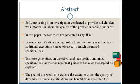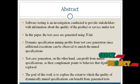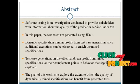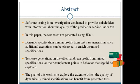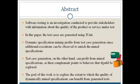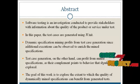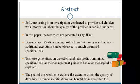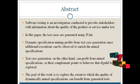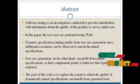Let us see the abstract of our process. Software testing is an investigation conducted to provide stakeholders with information about the quality of the product or service under test. In this paper, the test cases are generated using the unit. Dynamic specification mining profits from test case generation since additional executions can be observed to enrich the mined specification. Test case generation, on the other hand, can profit from mined specifications as their complement points to behavior that should be explored. The goal of this work is to explore the extent to which the quality of dynamically mined specifications can benefit from a generated test.